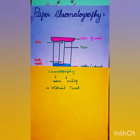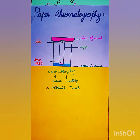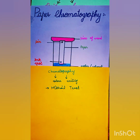This is a technique which is used to separate components of a mixture distributed between two phases. One phase is called the mobile phase, which is the running or moving phase — it is continuously moving. The other is the stationary phase, which is fixed in one place. In paper chromatography, the stationary phase is the paper.